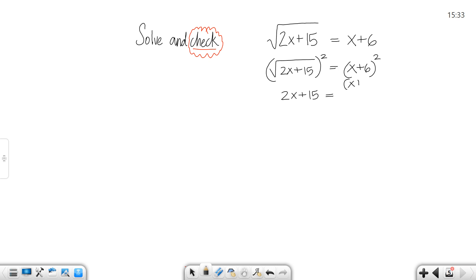On this other side, that means you're going to write x plus 6 twice and FOIL it out. So cleaning this up, I get that 2x plus 15 equals x squared plus 12x plus 36. And now I don't have a radical.